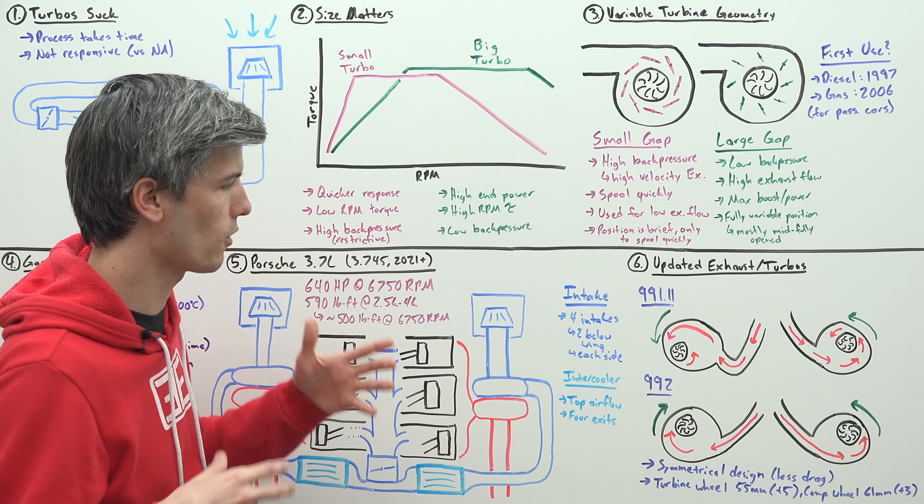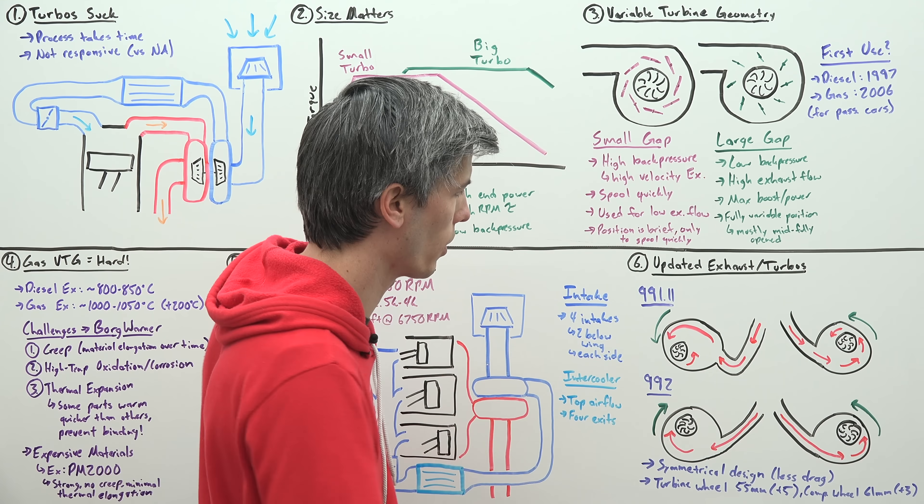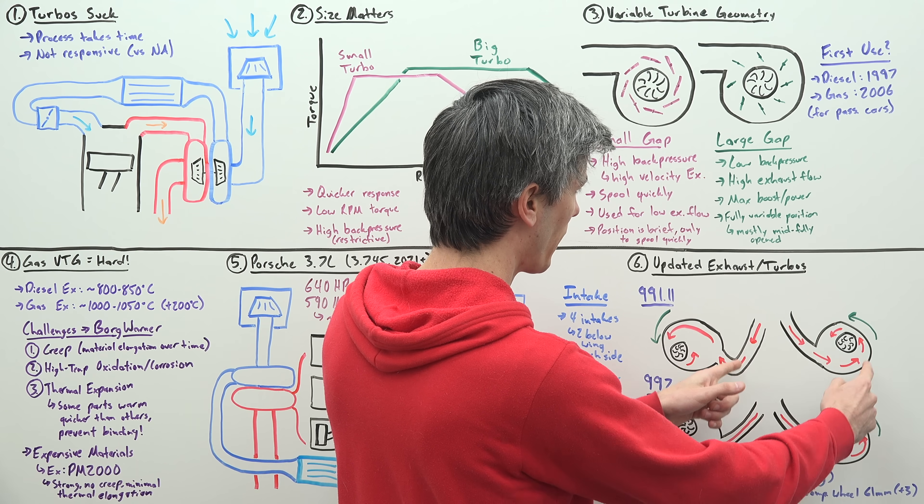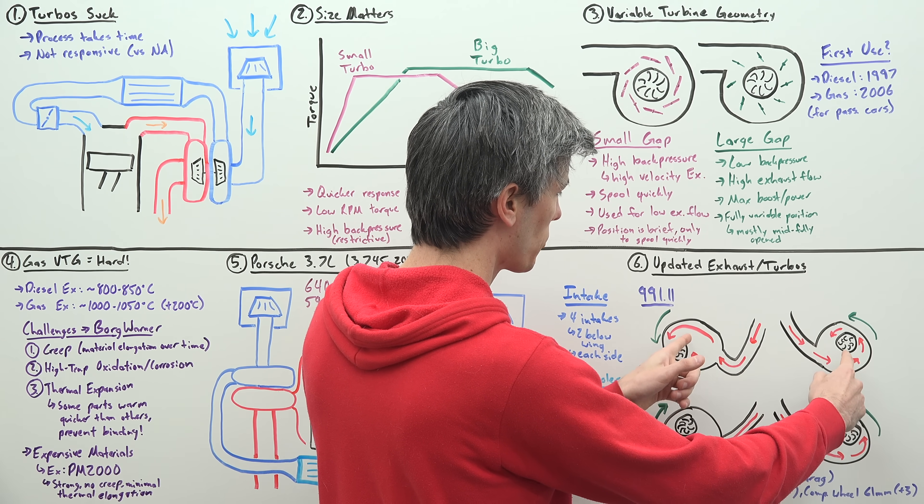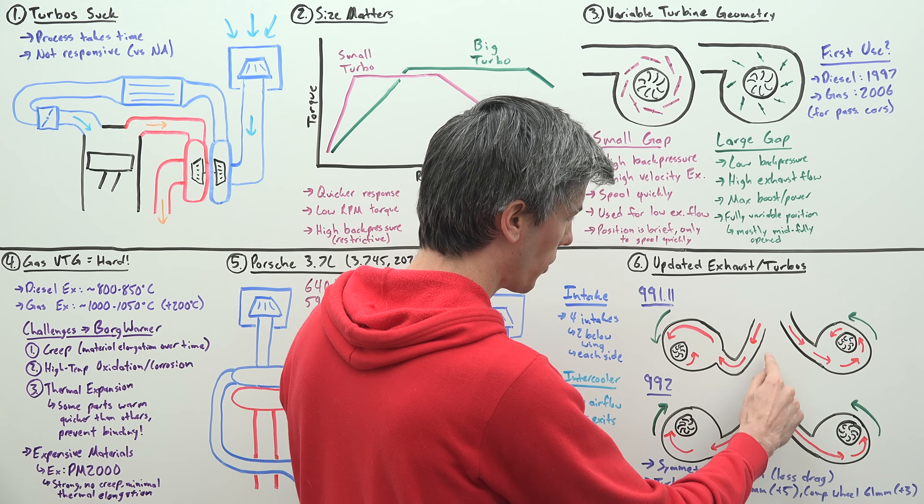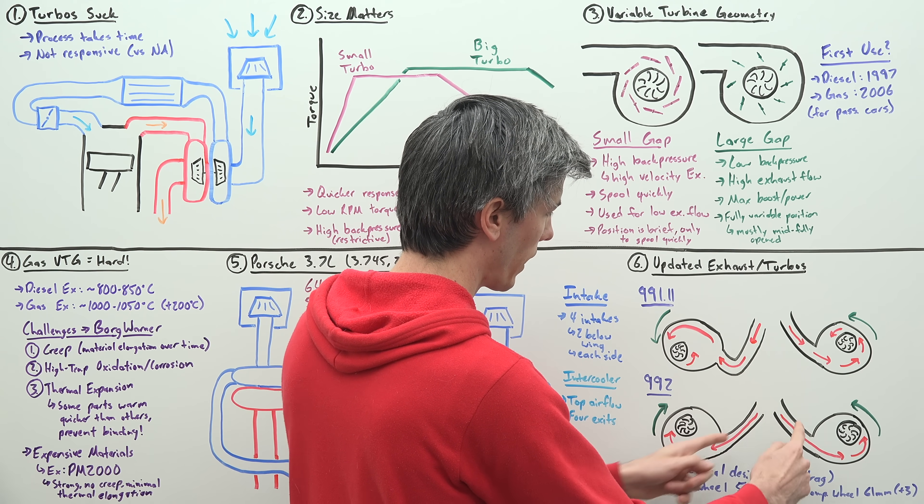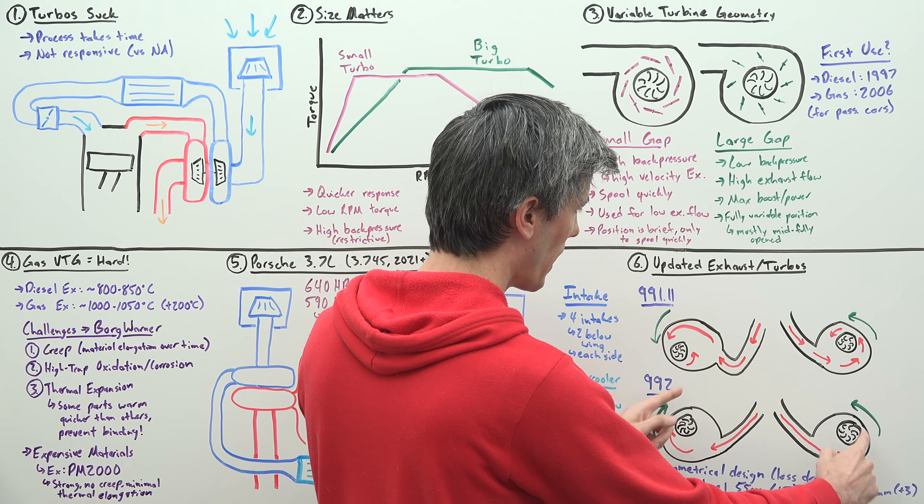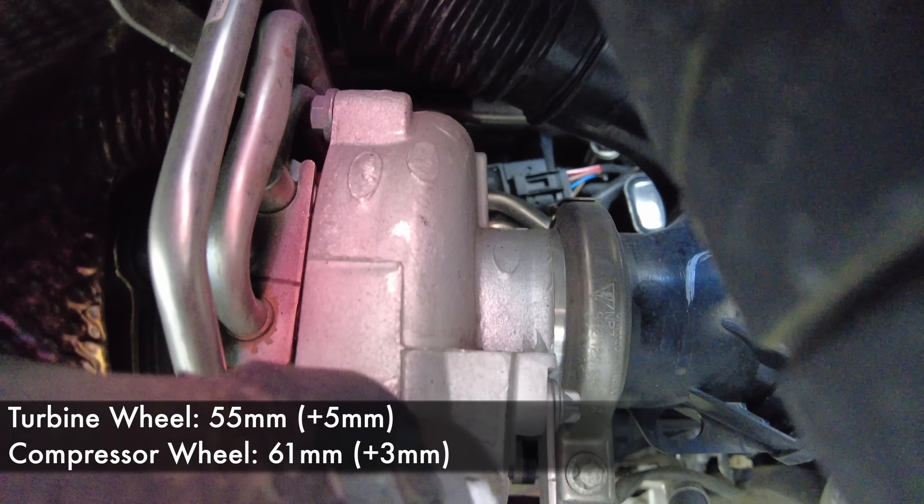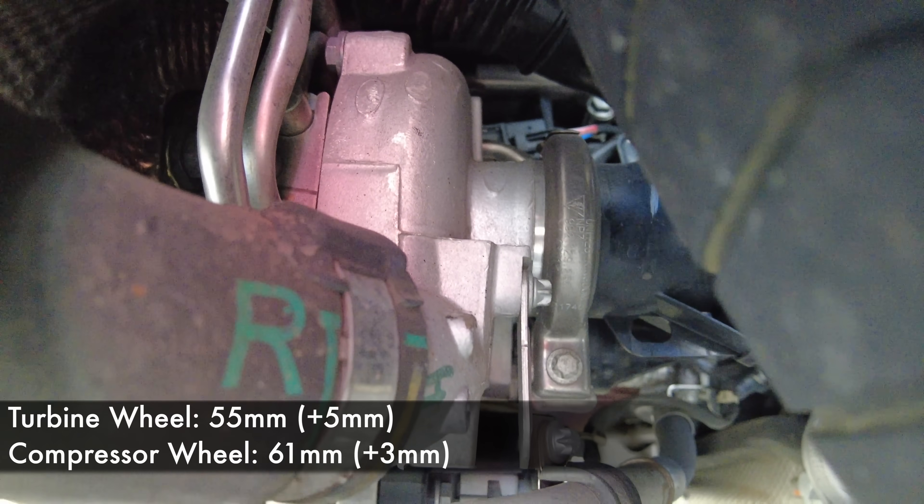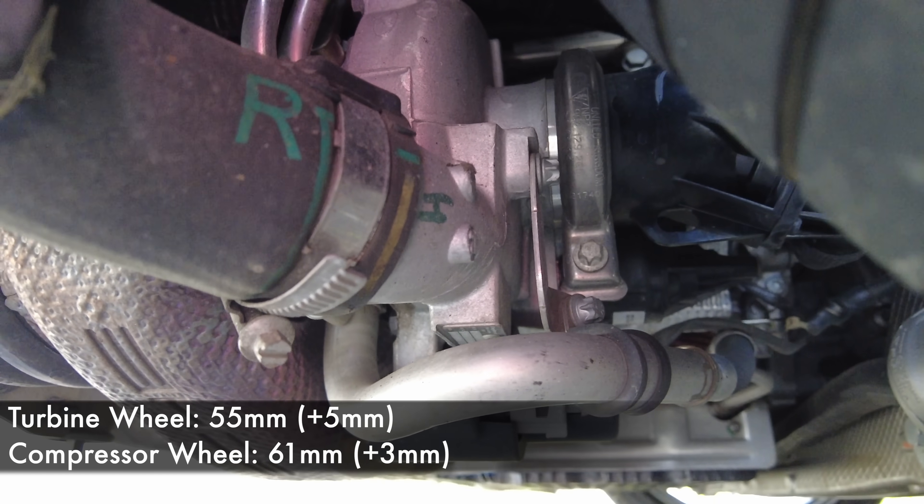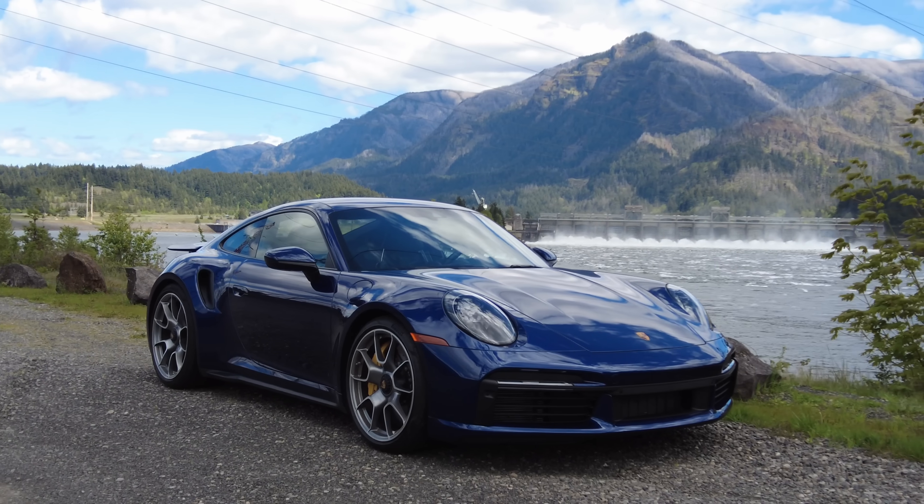The exhaust routing has also been updated to allow for a symmetrical design of the turbos. Instead of the previous generation where exhaust came out and the turbochargers were spinning in the same direction, now because they're on opposite sides of the engine you have a much cleaner flow without the kink and rerouting of airflow. You've got less drag for your turbochargers. They've also increased the size of the turbine wheel by 5 millimeters to 55 millimeters and the compressor wheel by 3 millimeters to 61 total millimeters.